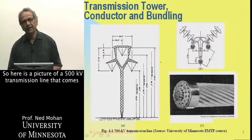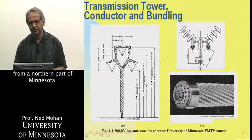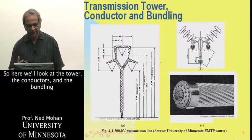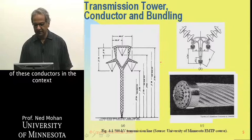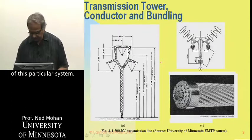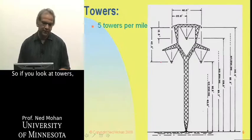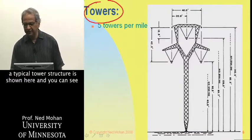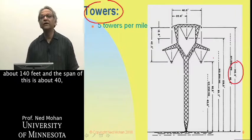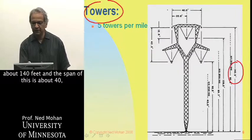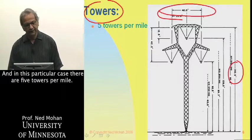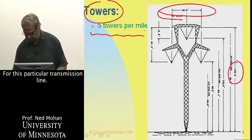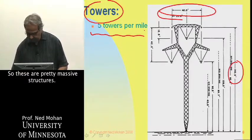Here is a picture of a 500 kV transmission line that comes from the northern part of Minnesota to somewhere very close to the Twin Cities. Looking at the tower, the conductors, and the bundling of these conductors in context of this particular system: a typical tower structure has a height above ground of about 140 feet, a span of about 40–50 feet, and in this particular case there are five towers per mile. These are pretty massive structures.